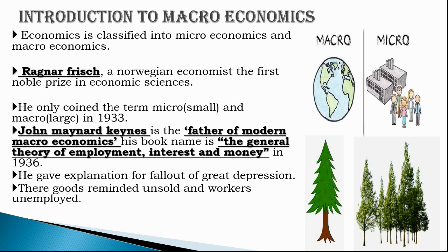Macroeconomics in its modern form was developed by John Maynard Keynes in his book 'The General Theory of Employment, Interest and Money', published in 1936. Keynes was the first person to explain the fallout of the Great Depression — when goods remained unsold and workers unemployed — and he provided a solution for it. He is therefore also considered the father of macroeconomics.